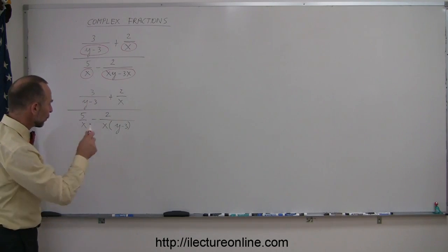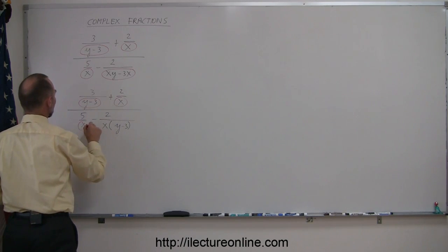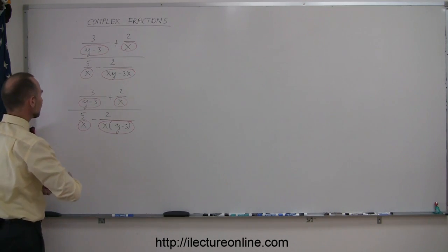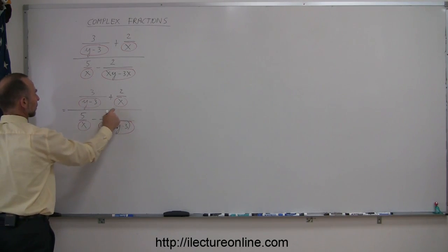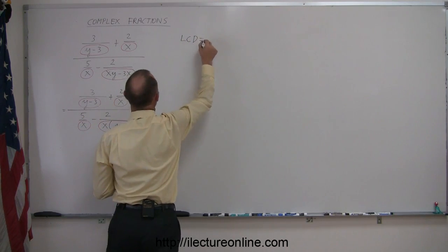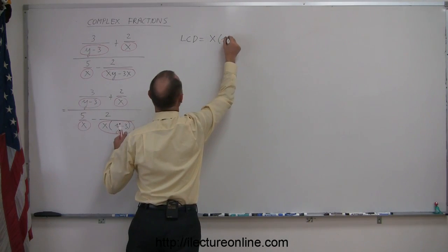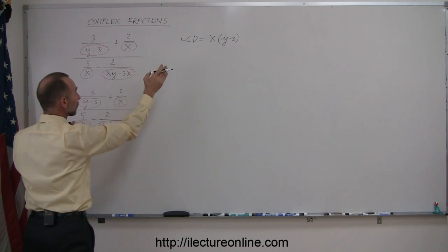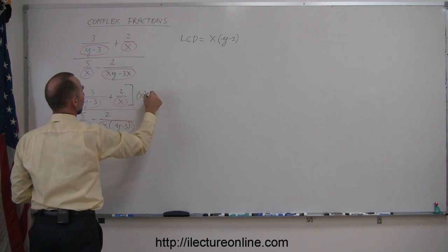The reason I did that — and I'm going to recircle my denominators now — is that by factoring, I notice there's a y minus 3, a y minus 3, an x, an x, and an x. So the lowest common denominator in this case is simply the product of x times y minus 3. Which means I'm going to multiply the numerator and the denominator by the LCD of x times y minus 3.